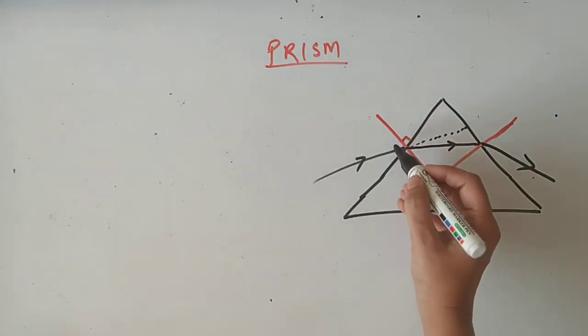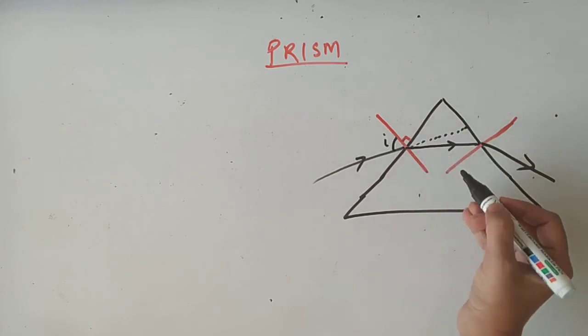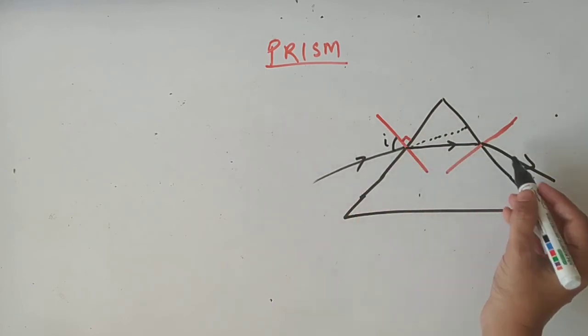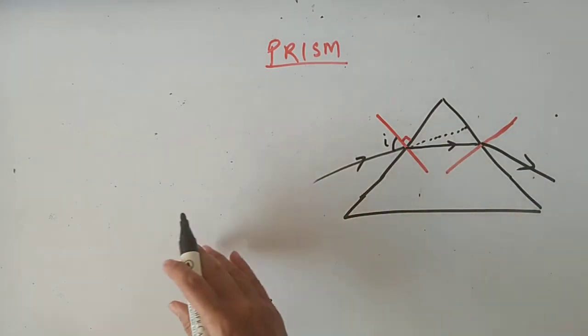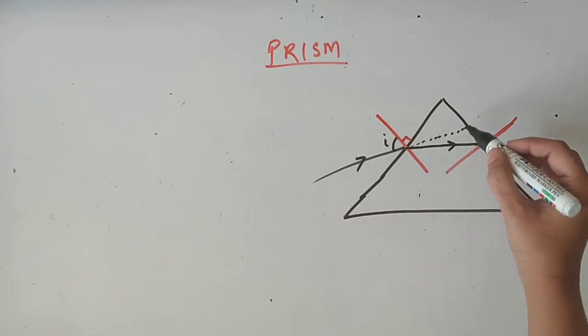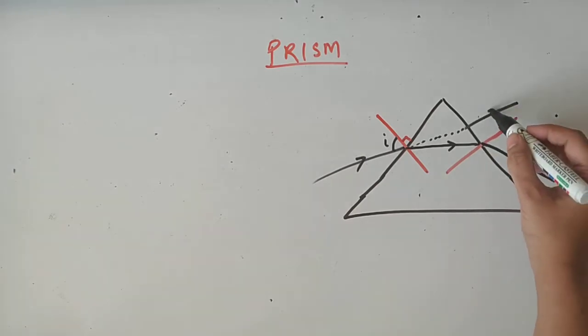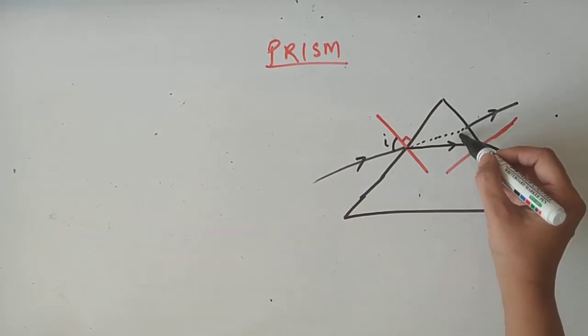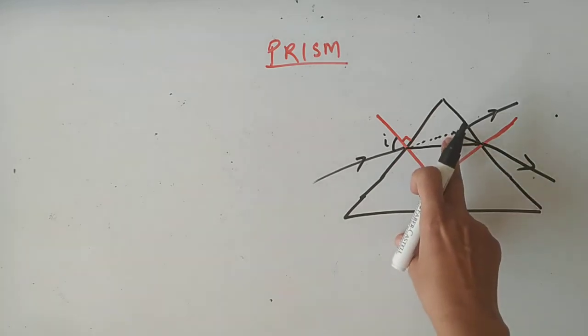Now this is the angle of incidence, this is the incident ray, and this is the emergent ray. We have seen in glass slab that the incident ray and emergent ray are parallel. But here, if I extend the incident ray, these are intersecting at one point.